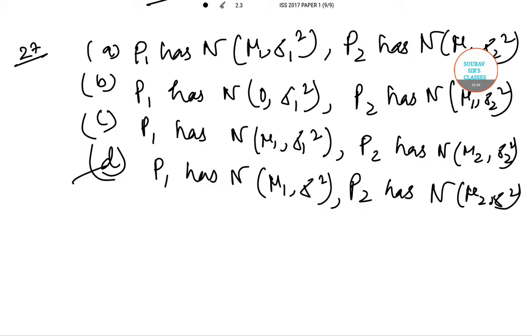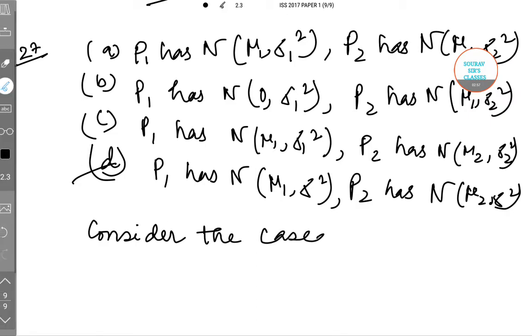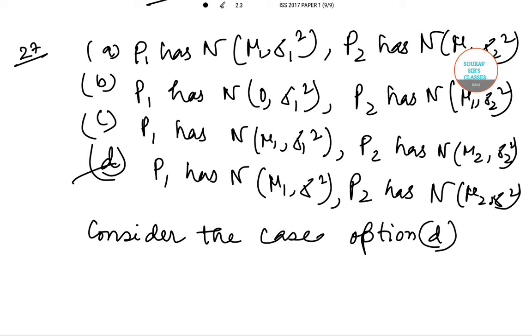Consider the case of option d. Here, x₁ and x₂ are iid with normal distribution of parameters μ₁ and σ².